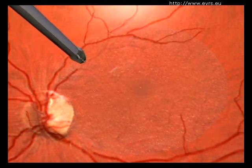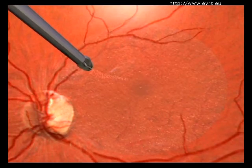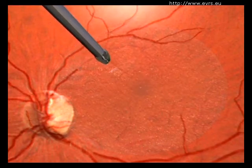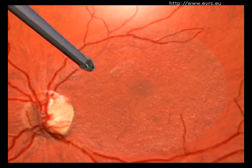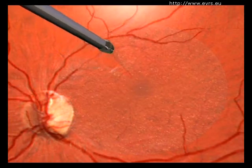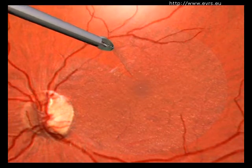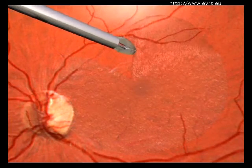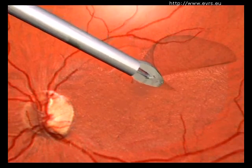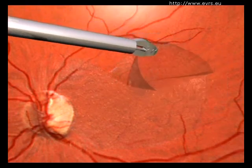Then, he will remove the internal limiting membrane of the retina from the posterior region. This membrane is a very thin film, a few microns thick, or in other words, ten times thinner than a piece of hair.